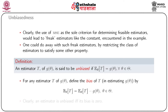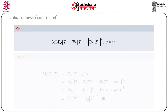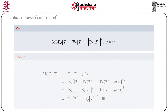If T is not an unbiased estimator of g(θ), then the bias of T is defined by b_θ(T) = E_θ(T) − g(θ) for all θ ∈ Θ. We shall now show that the MSE of an estimator T can be decomposed into two parts: one is the variance of the estimator T and the other is the square of the bias of T.